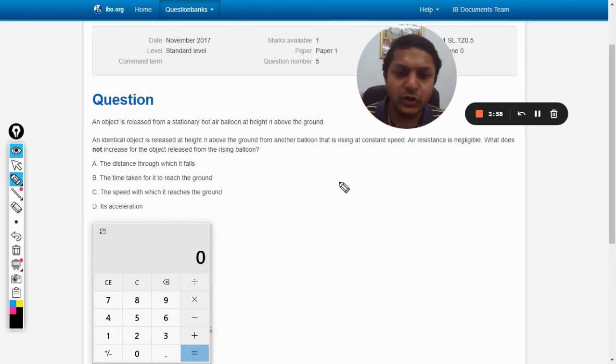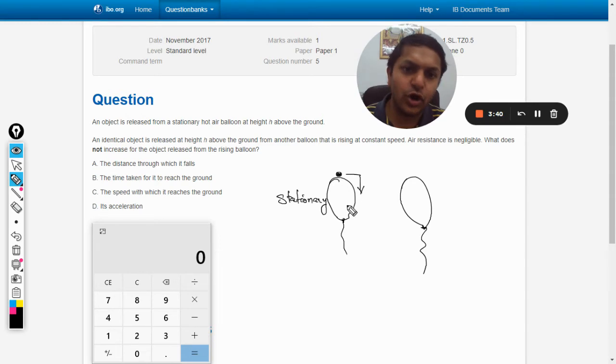About the question, there are two balloons. Let's say there is a stone here, and this is a stationary balloon. It is dropped from this, so obviously the initial velocity here will be equal to zero.